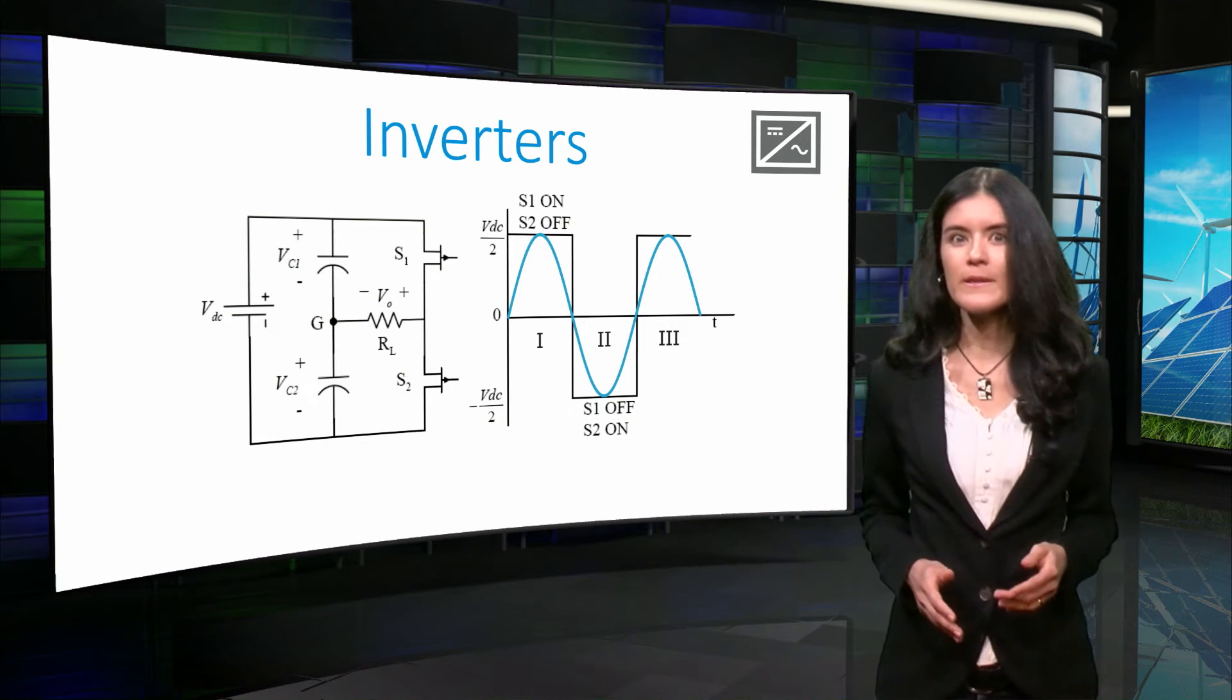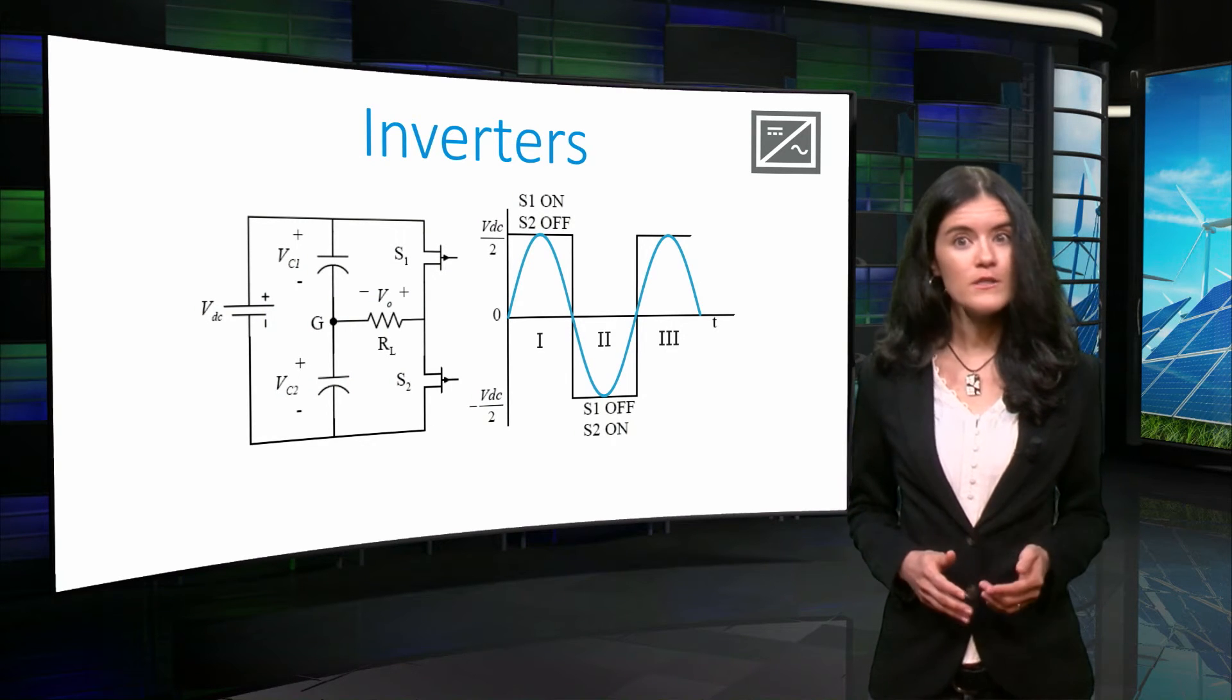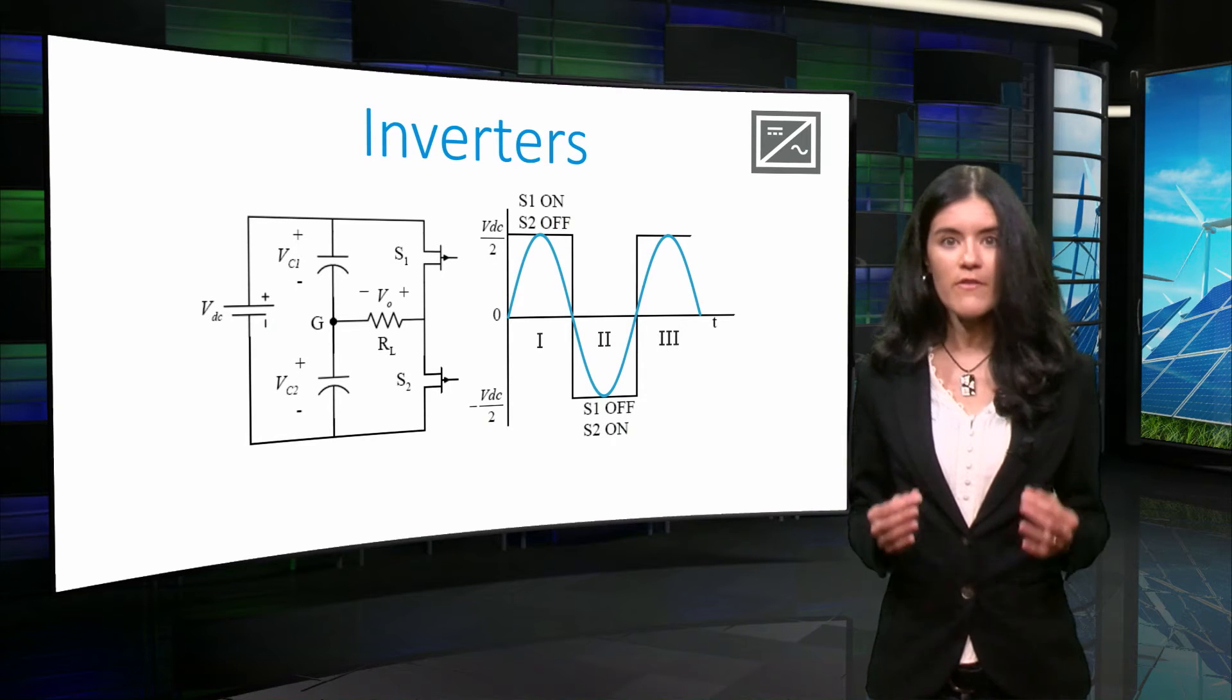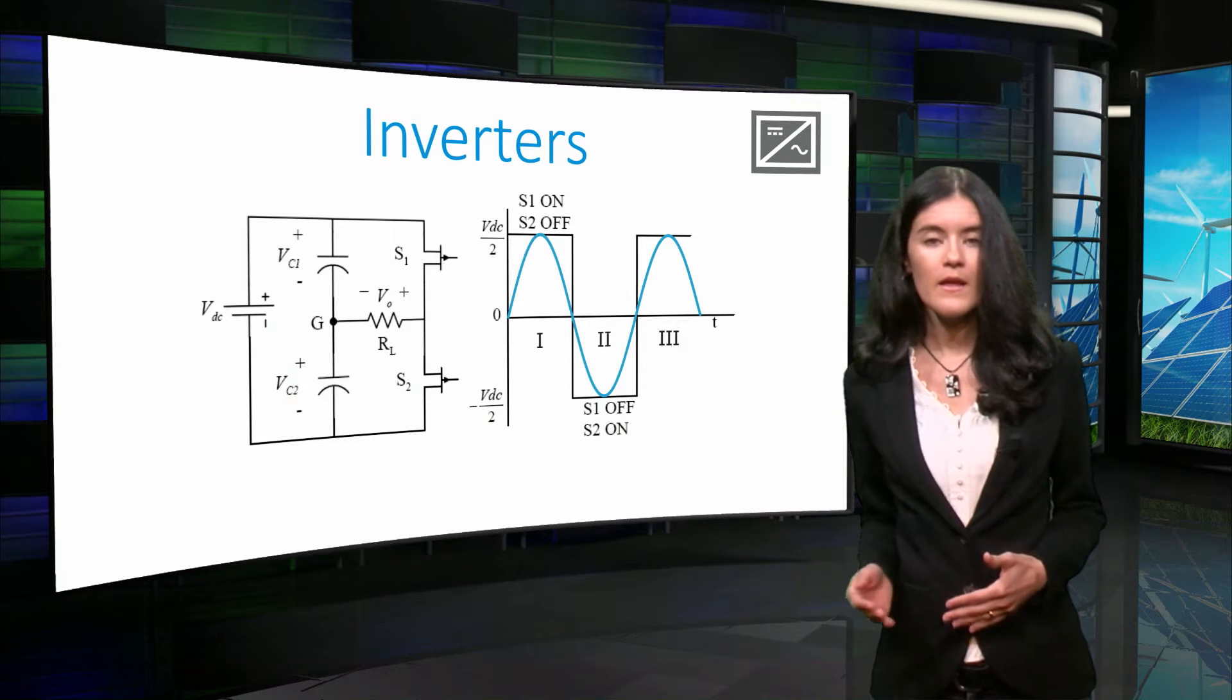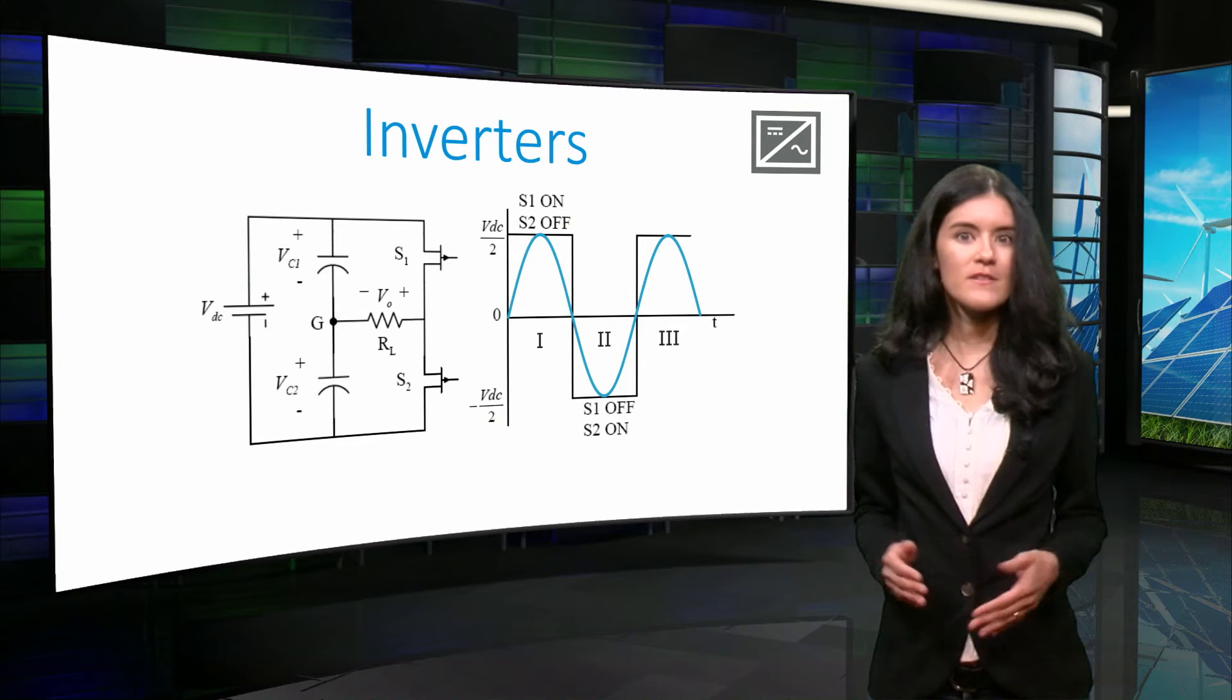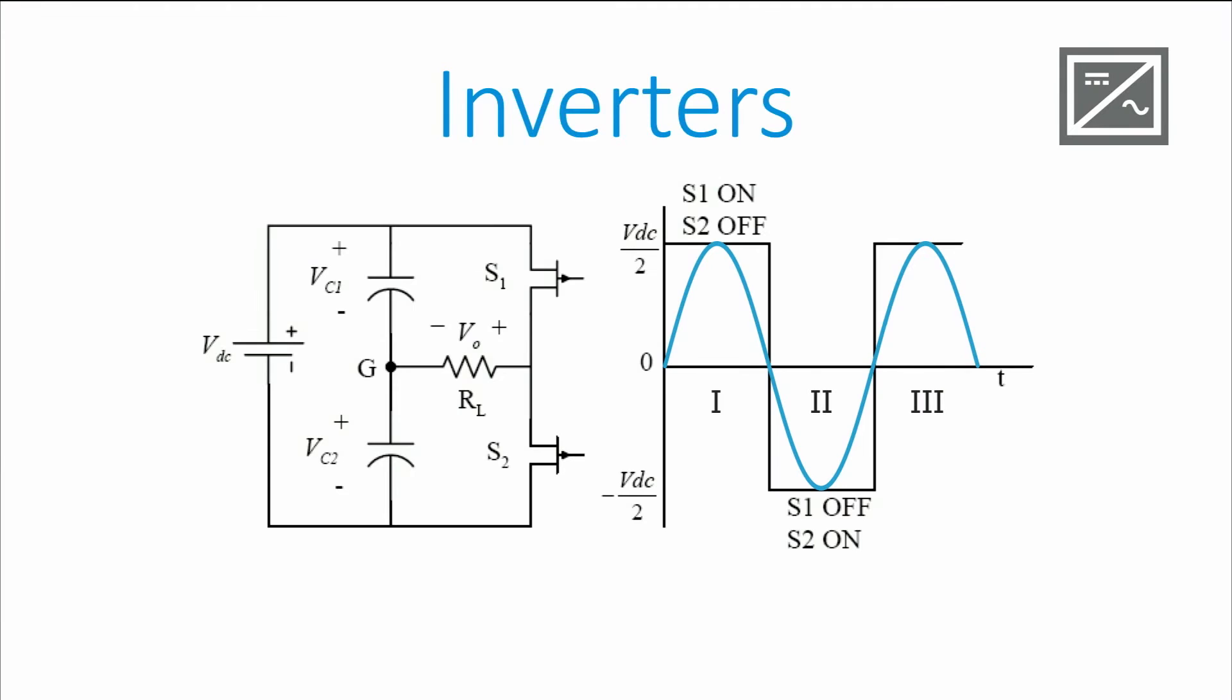As I mentioned during the previous lecture, the topology of the circuit inside the power converter will define how close the signal will look to the ideal. In this case, a perfect sinusoidal wave. By using more semiconductor devices in more complex topologies, it is possible to obtain better outputs.